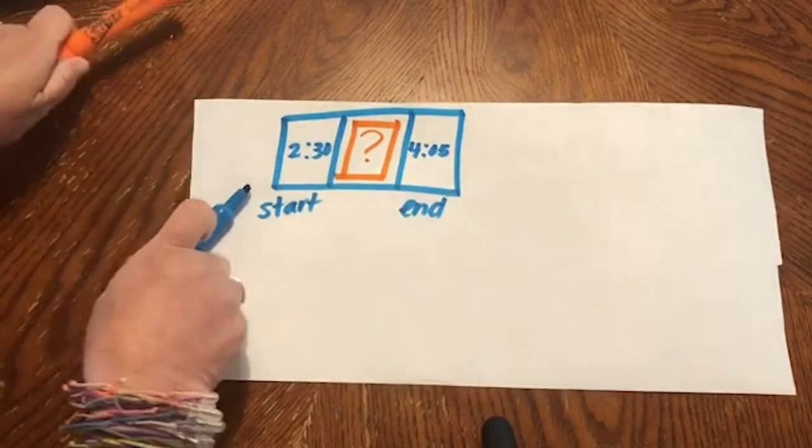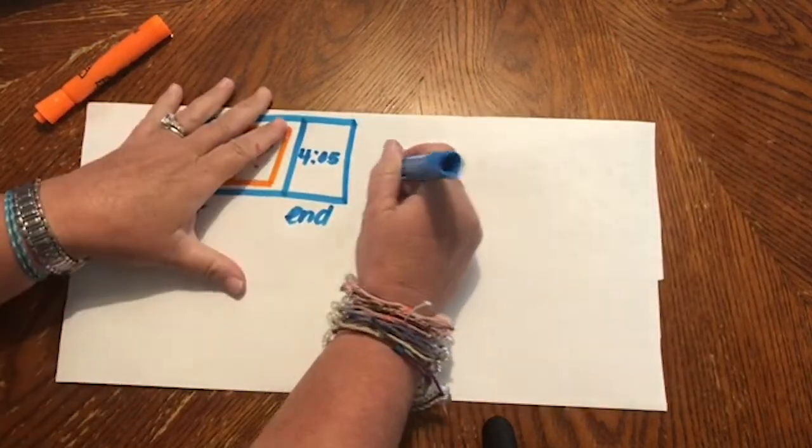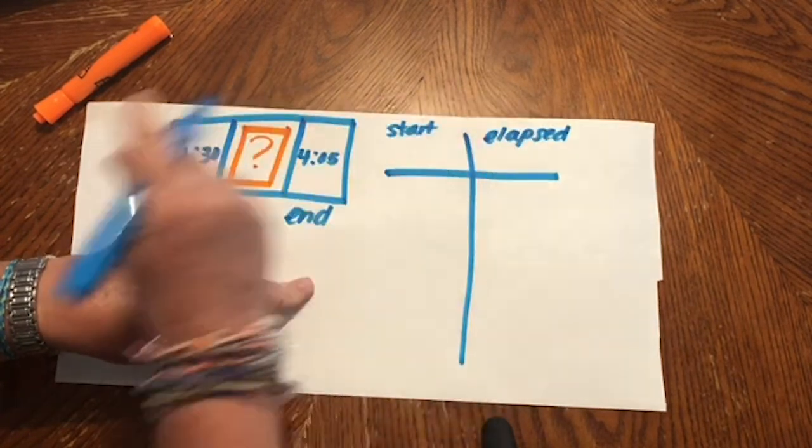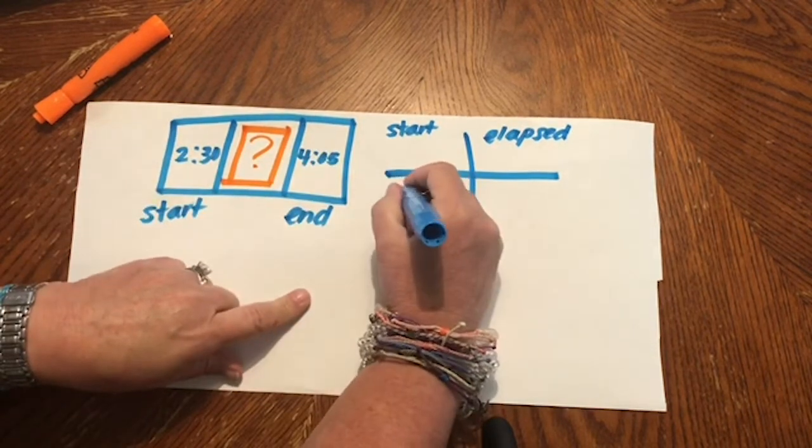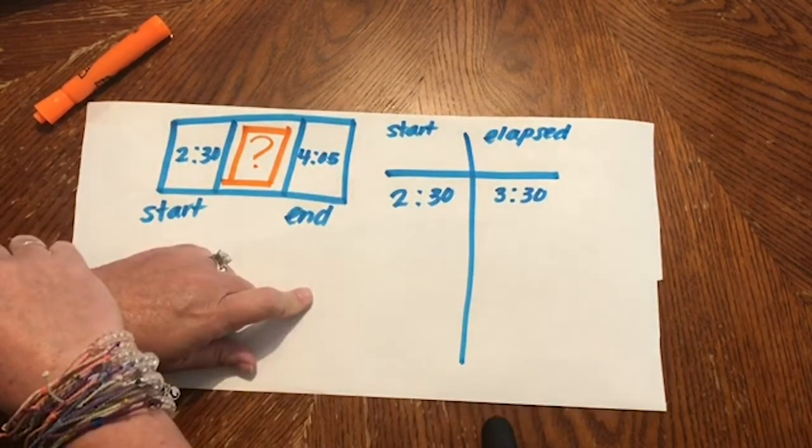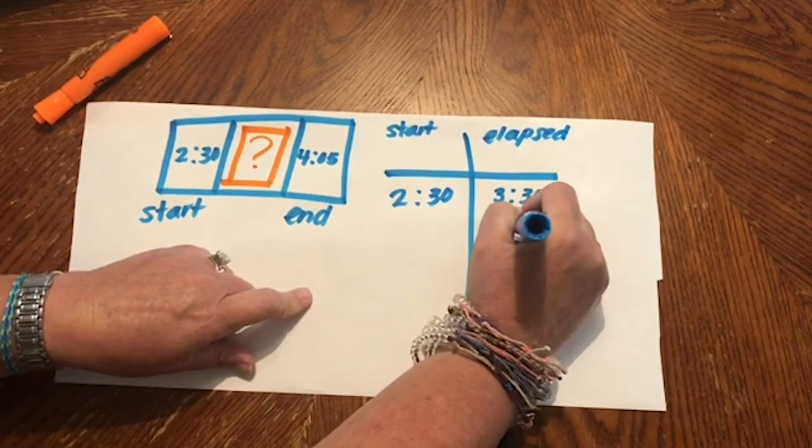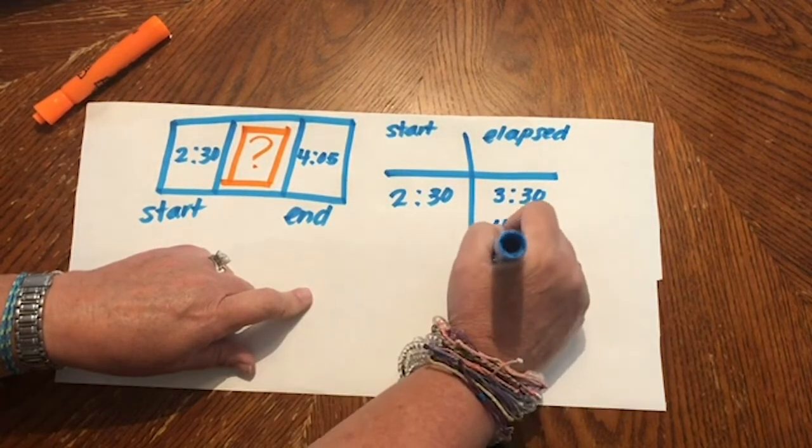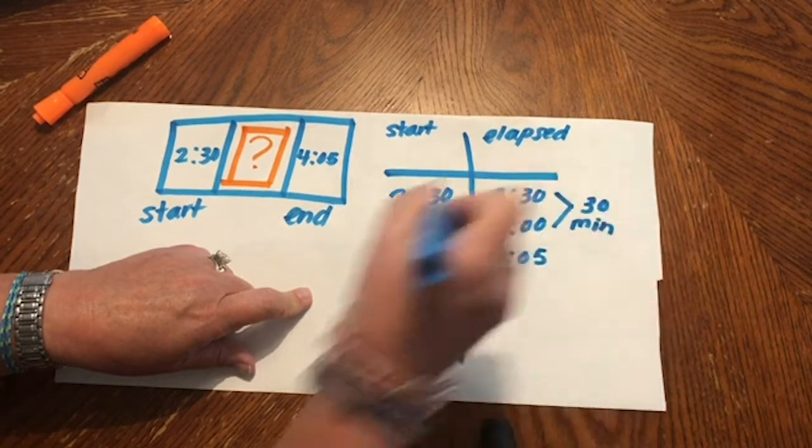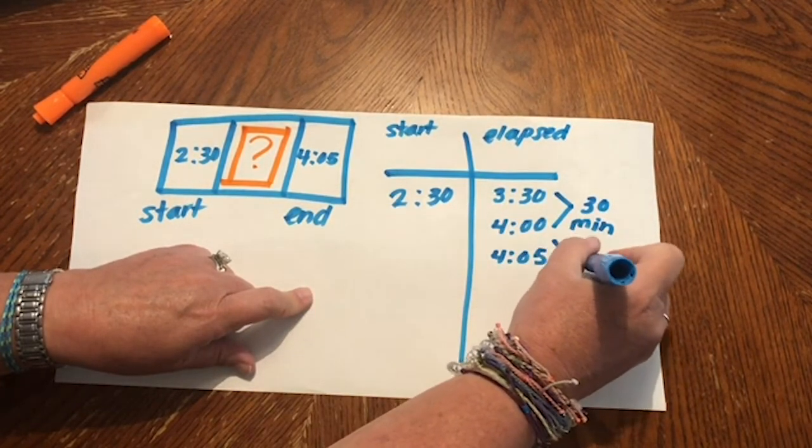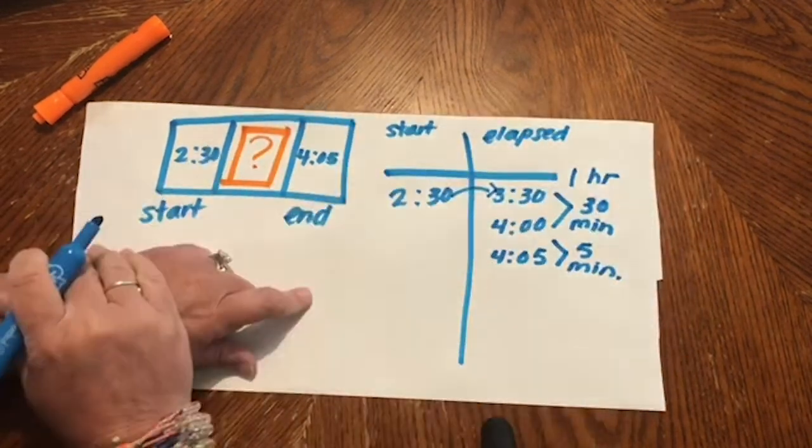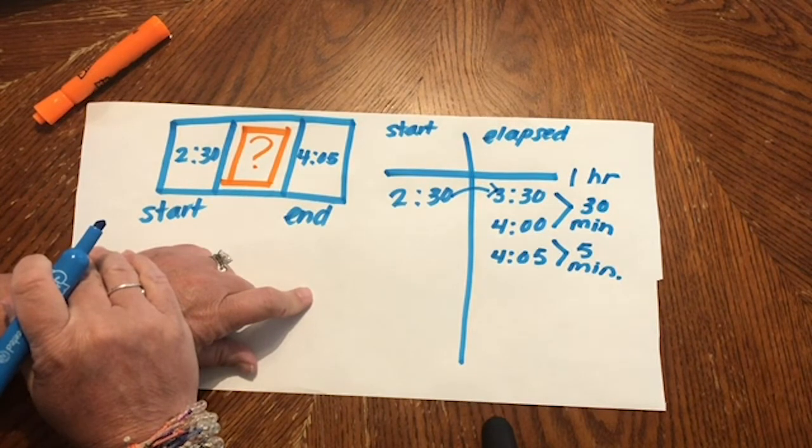To make a T-chart, I like to show the start time and then the elapsed time. That helps me figure out what was in between. 2.30 was my start time and just like on the number line, I'm going to jump to the next full hour of 3.30. I will then go to 4 o'clock and last from 4 o'clock to 4.05. This is a difference of 30 minutes. This is a difference of 5 minutes. And don't forget the hour that passed by originally. You can still see how it's broken into 1 hour and 35 minutes.